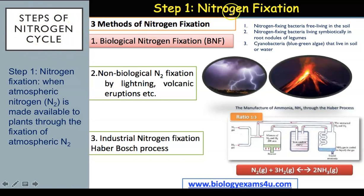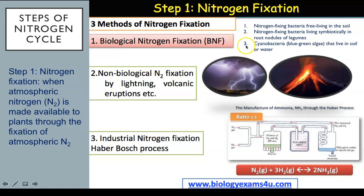Step one of the nitrogen cycle is nitrogen fixation — when atmospheric nitrogen is made available to plants through fixation of atmospheric nitrogen. This can occur in several ways. Biological nitrogen fixation includes nitrogen-fixing bacteria living free in the soil, nitrogen-fixing bacteria living symbiotically in the root nodules of legumes — the plant provides bacteria with sugars from photosynthesis and the bacteria provide the plant with nitrates — and cyanobacteria, also known as blue-green algae, that live in soil or water. These bacteria are the cause of the high productivity of Asian rice fields, many of which have been productive for hundreds or even thousands of years without nitrogen-containing fertilizers.